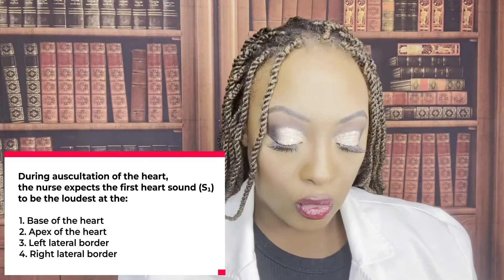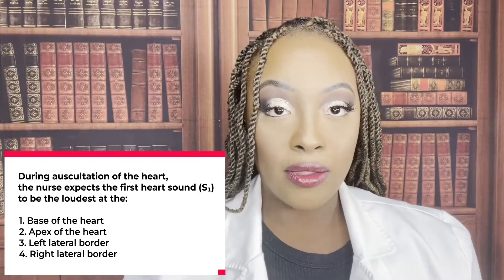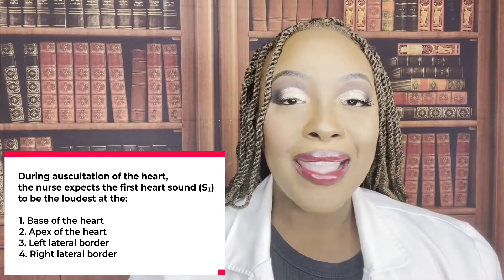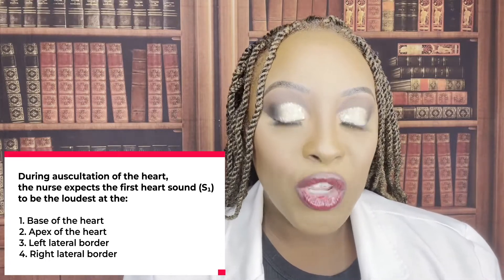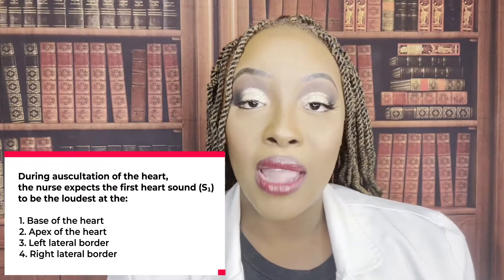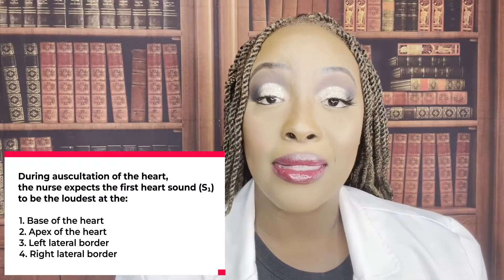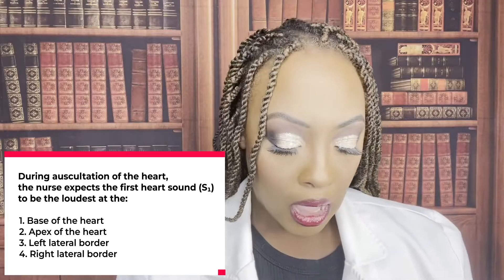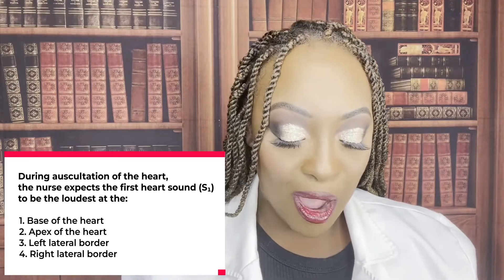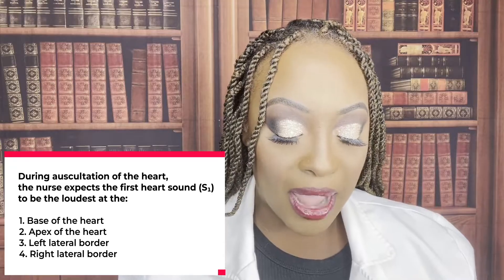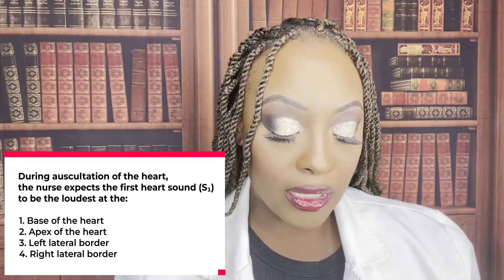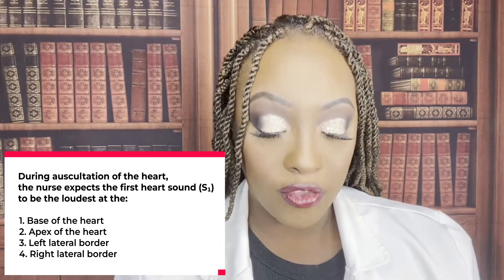Now let's look at the wrong answer choices. One, base of the heart — that's where you hear the dub, your S2, which is closure of the aortic and pulmonic valve. They close at the same time — it's simultaneous. Choices three and four are just wrong. When they're asking about that S1, that lub sound, the correct answer is number two, apex of the heart.